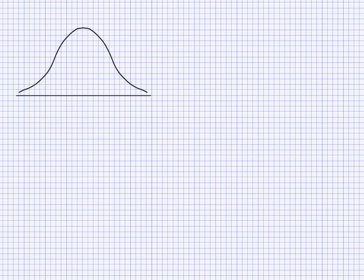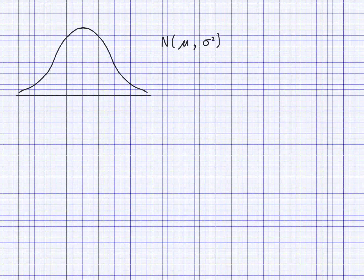The normal distribution will be denoted like this: there will be an N, then the mean, and then what we call variance. The variance is basically the standard deviation squared. So if this notation is given to you, you will know to find the standard deviation you need to square root the variance.